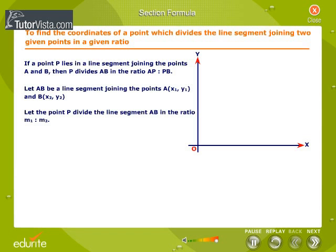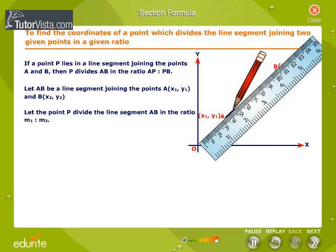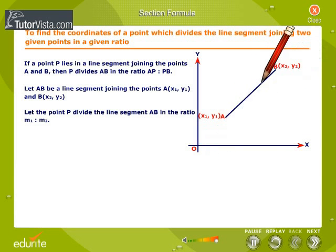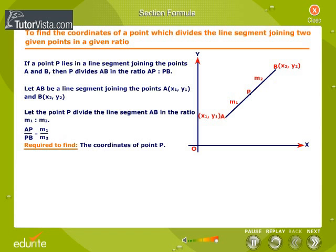Let AB be the line segment joining the points A and B, and let point P divide the line segment AB in the ratio M1 is to M2, i.e., AP by PB is equal to M1 by M2. We are required to find the coordinates of point P.